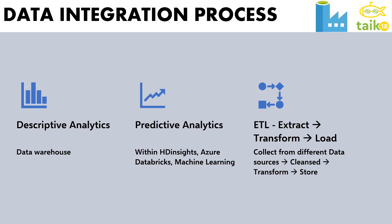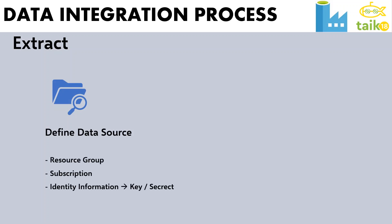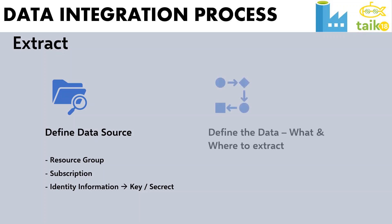Now let's look into what extract means. In the extract phase, we have two things: first, define the data sources, where we need to define the resource group, subscriptions, and identity information like keys and secrets. After that, we need to define what and where to extract — for example, extracting through a database query, through files, or through blob storage.